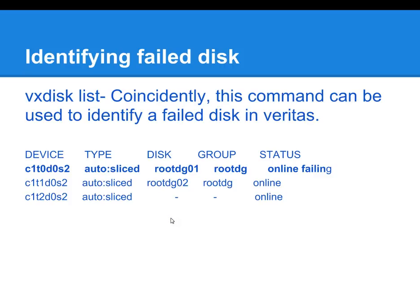Identifying failed disks: VXDisk list is one of the commands that we could use to identify failed disks. As an example, controller one, target zero, disk zero has failed and the status is online and failing.